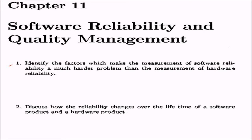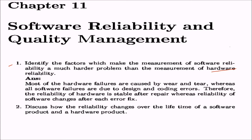The first question: identify the factors which make the measurement of software reliability a much harder problem than the measurement of hardware reliability. The answer: most hardware failures are caused by wear and tear, but software failures are not caused by wear and tear — they are due to design and coding errors. So the reliability of hardware is stable after repair, whereas the reliability of software will change after each error fix or debug.